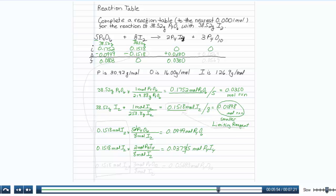Last one, 0.1518 moles of I2. And in my reaction, for every 8 moles of I2, I produce 3 moles of P4O10 because there's a 3 in front of the P4O10 in the reaction. Multiply that out and it comes out to 0.05693 moles of P4O10.